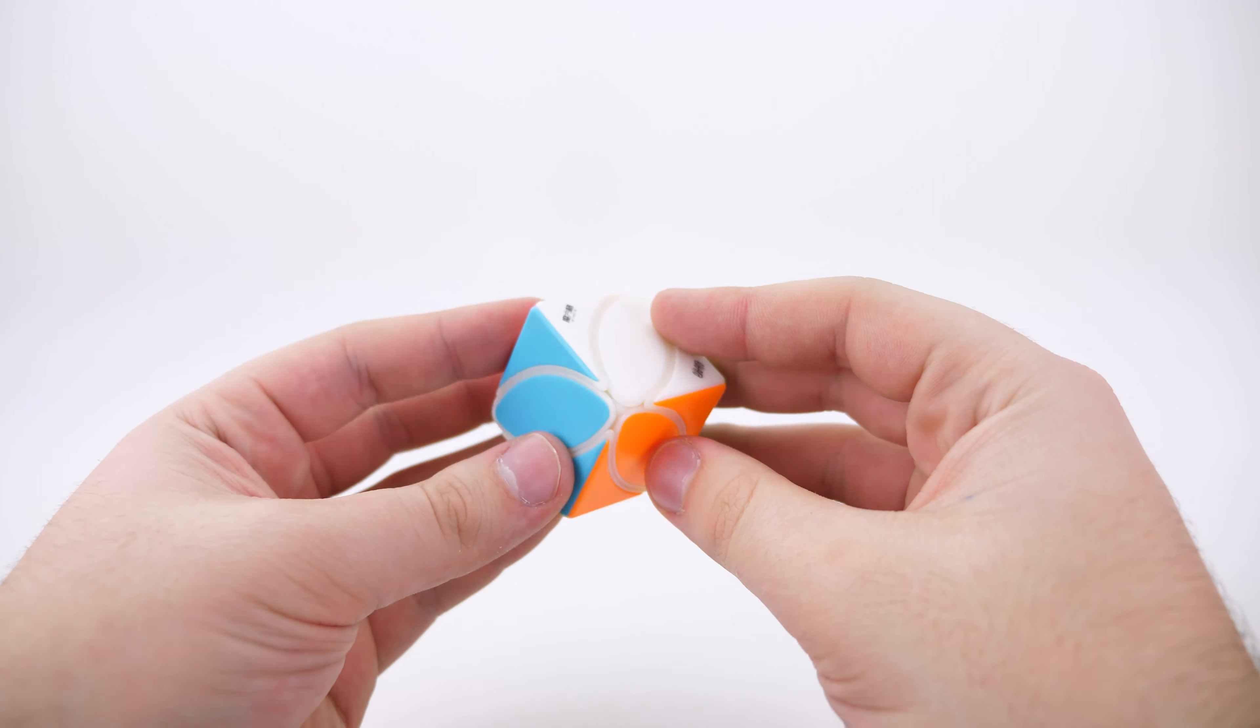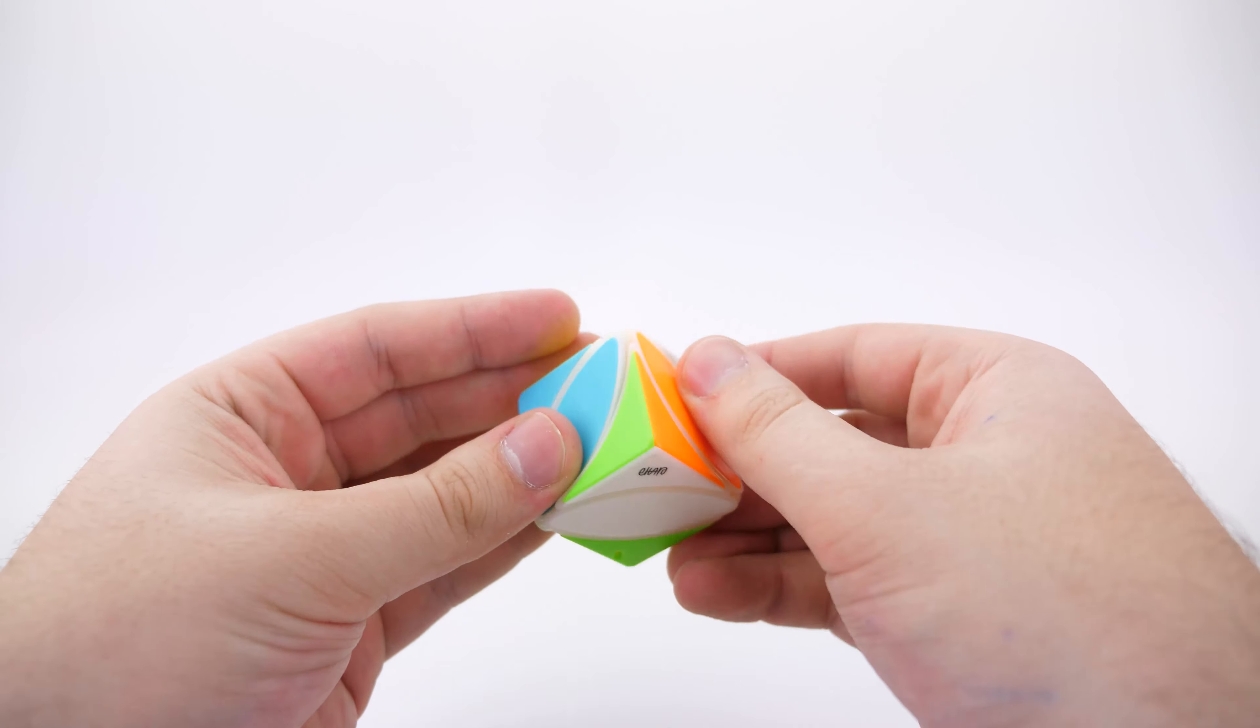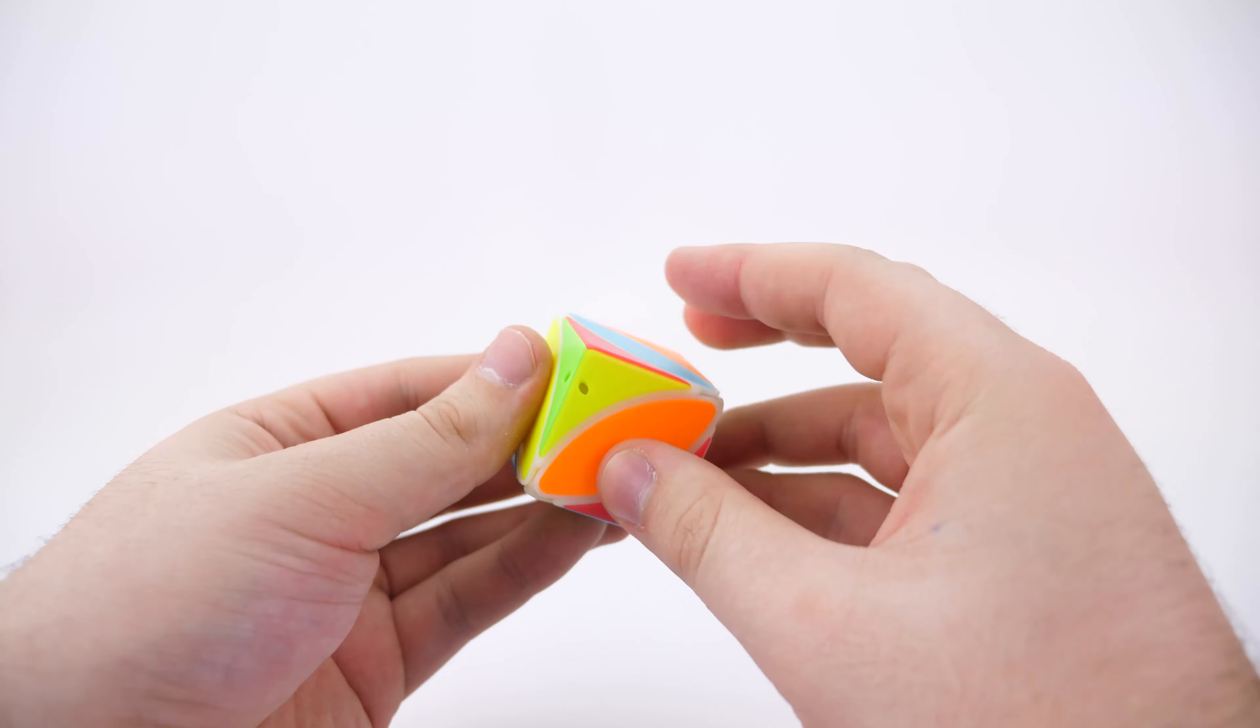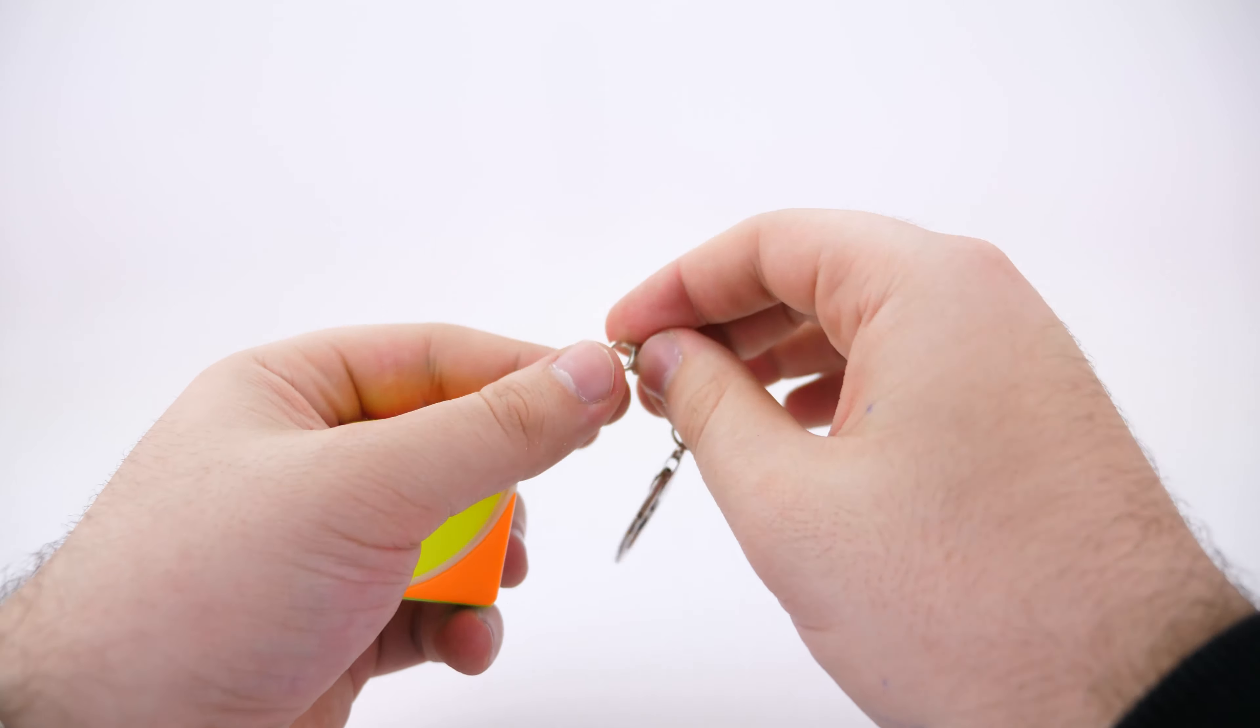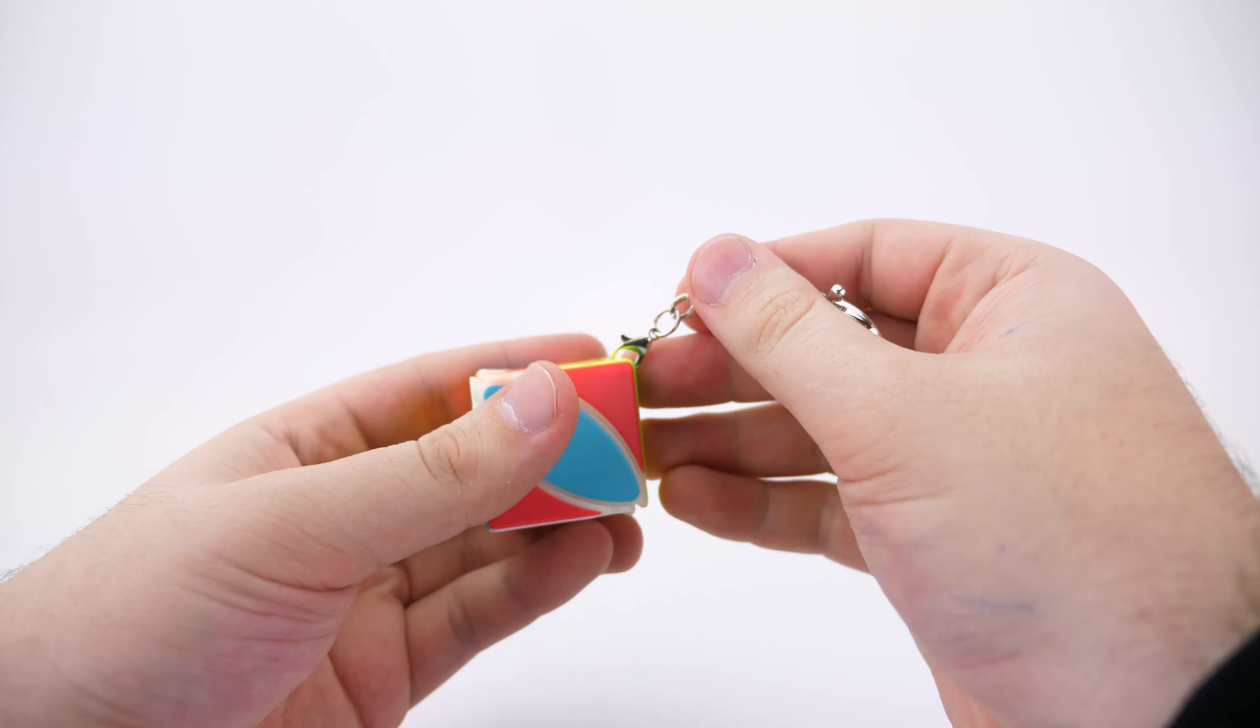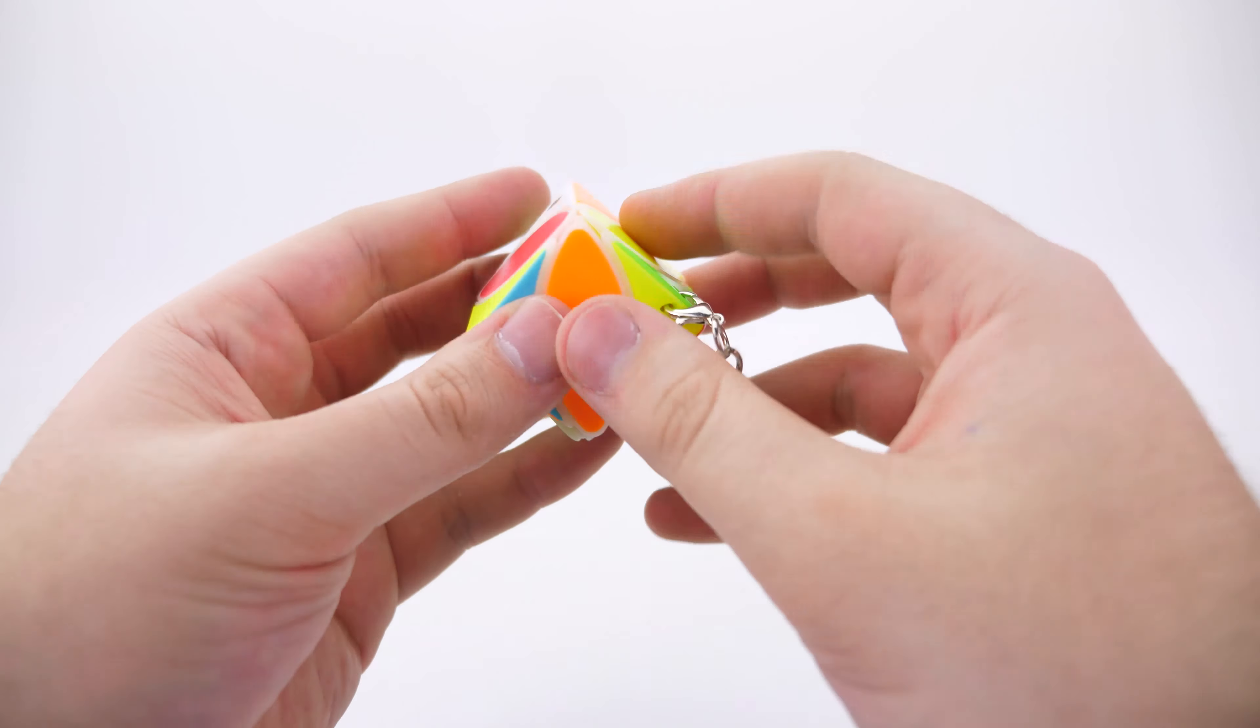Let's do some first turns. Oh, okay. Really not bad at all. I was expecting a lot worse because it's tiny, but actually really good turning. Let's see how the key chain goes on. Okay. Okay. Cool.